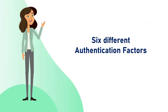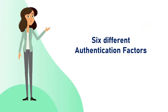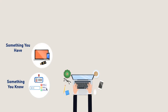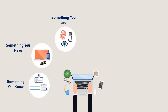These authentication methods can be categorized under six sections. Something you know, like username and password, PIN, security question, etc. Something you have, like a cell phone, keycard, or encrypted USB, laptop, etc. Something you are, like fingerprints, iris scans, or some other biometric data.